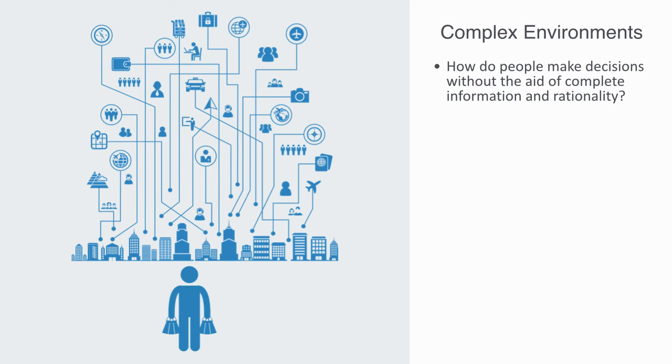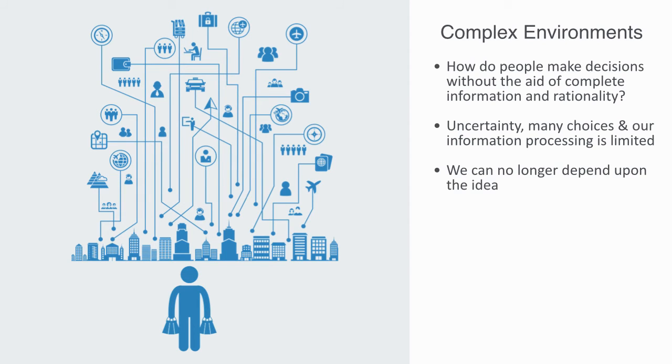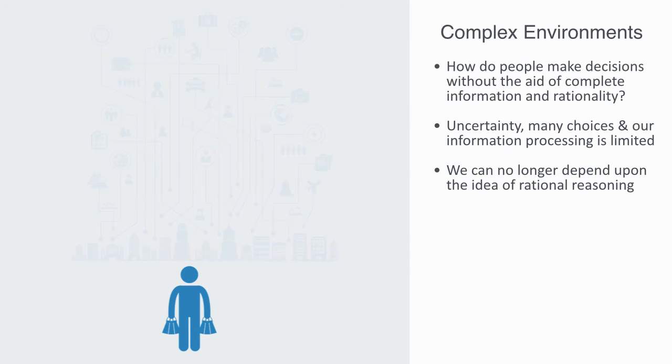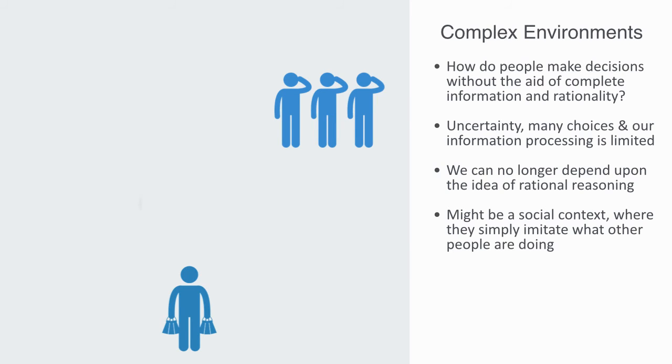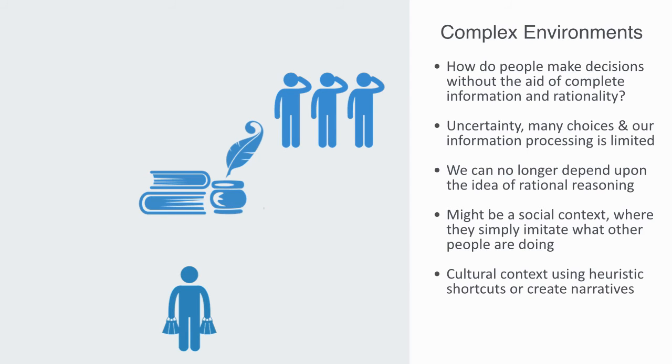We can no longer, simply depend upon, our own, independent, rational capabilities, to make decisions. In such circumstances, people resort to the aid of context. This might be a social context, where they simply imitate what other people are doing. Or they might use a cultural context, using heuristic shortcuts, or create narratives that enable them to form decisions. Or they may even use their physical environment, as another context, through which to interpret, an uncertain situation.